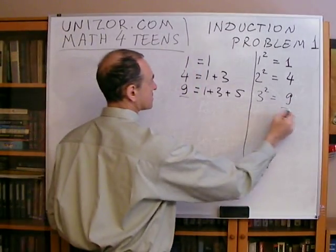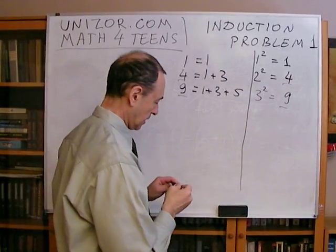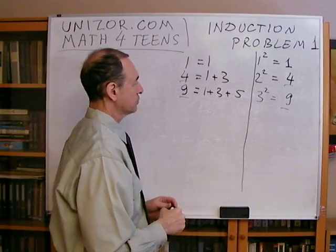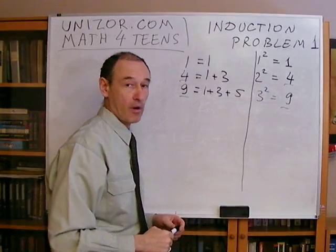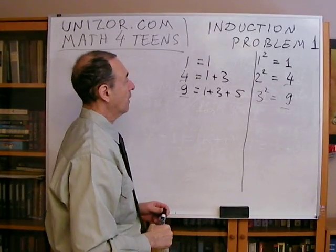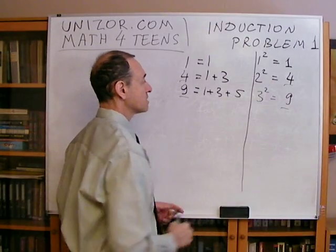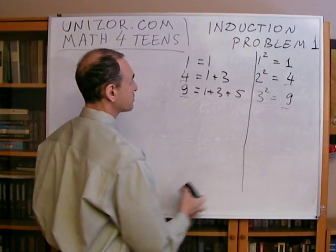Is this a coincidence? Well, definitely not. And here is what we are trying to prove: that if we have a certain number of odd numbers added together, then the sum will be equal to the number of these numbers squared. And here is how to express it mathematically.